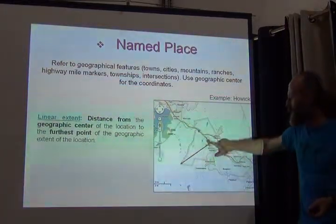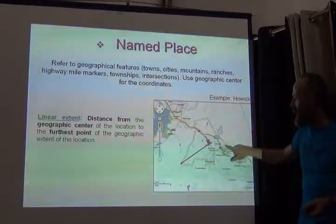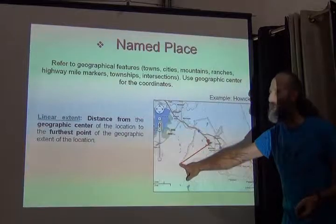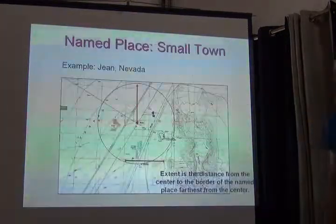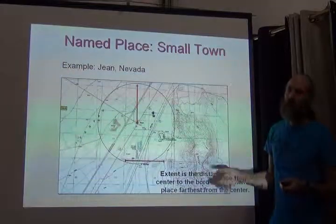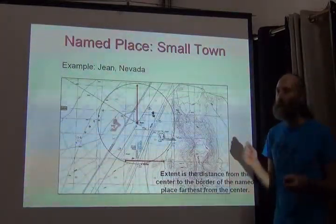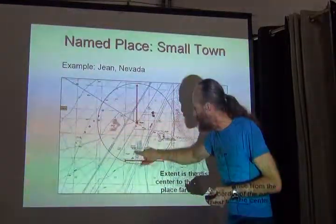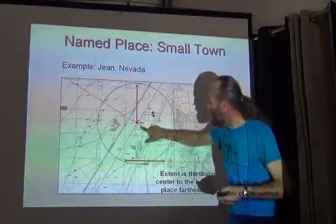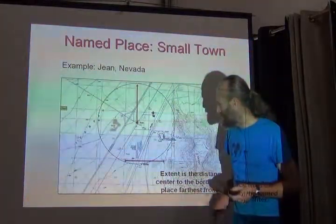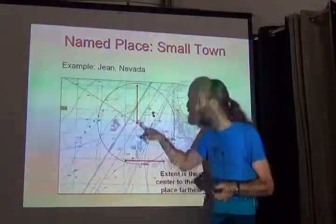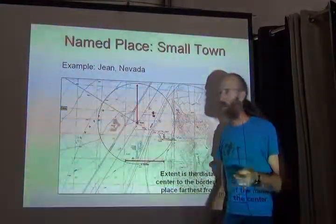For named places, find the geographic center — here's my named place with a border in Google Maps — find the center, measure the distance to the farthest point away, and that's your linear extent. A small town is an example of an unbounded named place. Looking at the map, we see water tanks, a prison, buildings, and houses — all associated with the name 'Gene' on the map — but we don't know the boundaries.